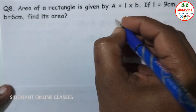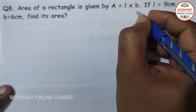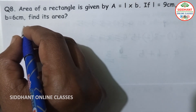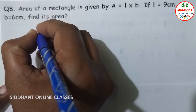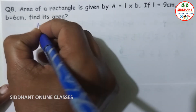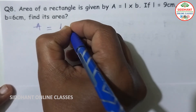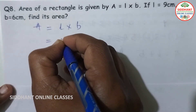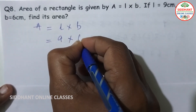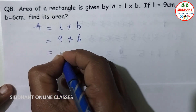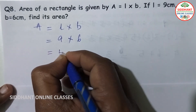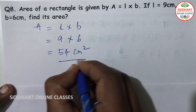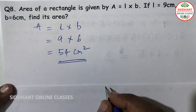Question number 8: area of a rectangle is given by A equals L into B. If L is 9 centimeters and B is 6 centimeters, find its area. So A equals 9 into 6 equals 54 centimeters square.